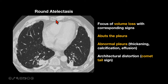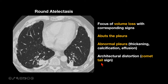The second entity to keep in mind is round atelectasis, which is pretty common and you'll see these next to the pleural plaques. There are four hallmarks: one, it's a focus of volume loss, so you'll see signs like the fissure being pulled in or the diaphragm pulled up; second, the focus of atelectasis will be next to the pleura; third, the pleura will be abnormal; and fourth, you'll have architectural distortion, also called the comet tail sign, around the area of atelectasis. Note that these areas don't have to be round — you can have linear or band-like areas as well.